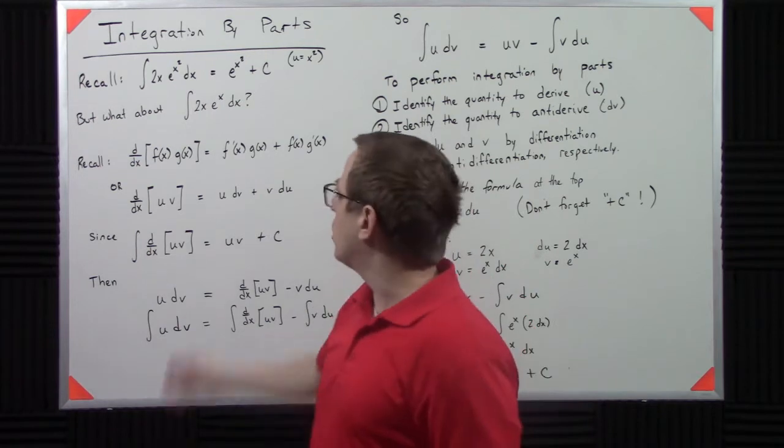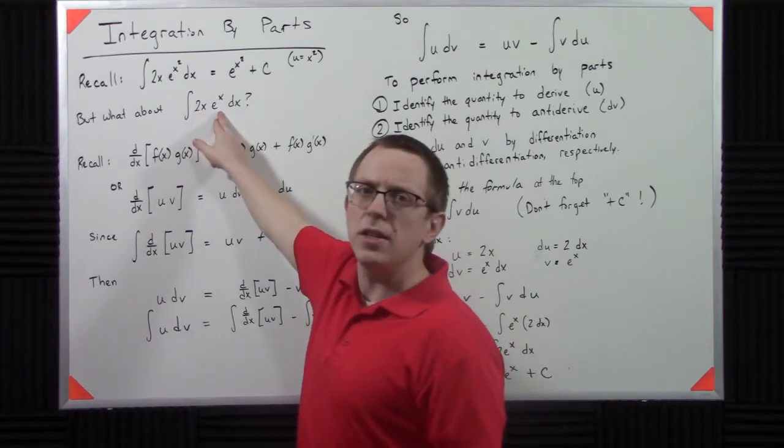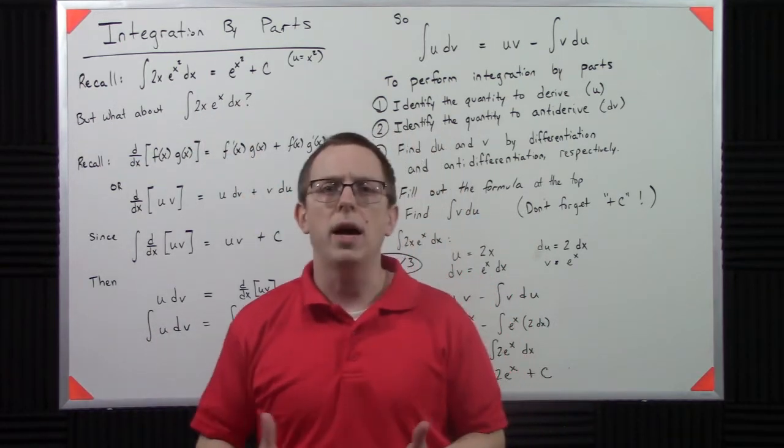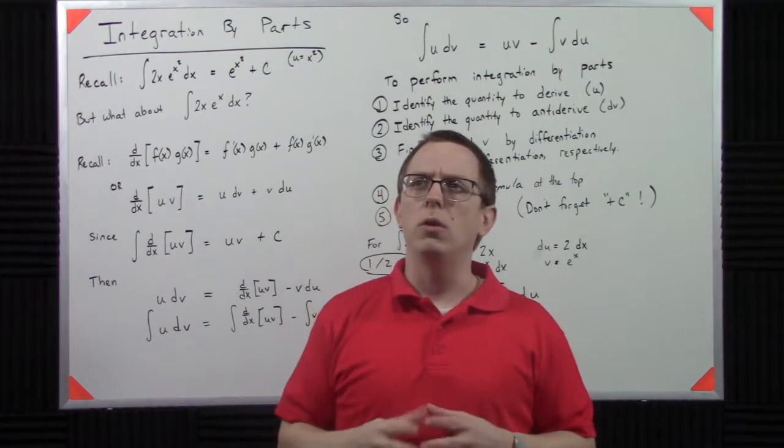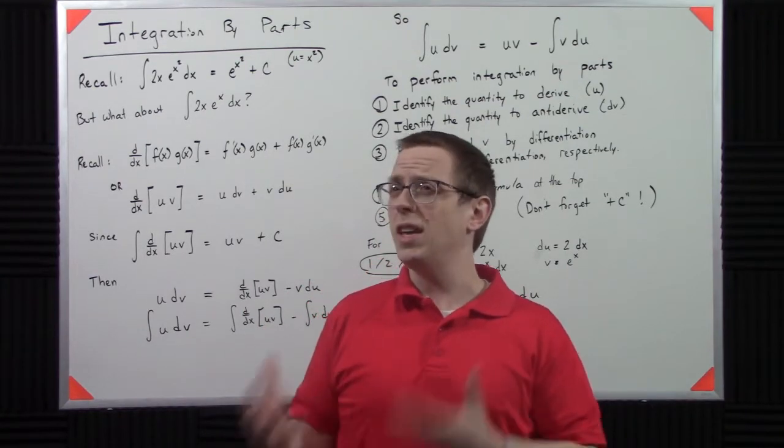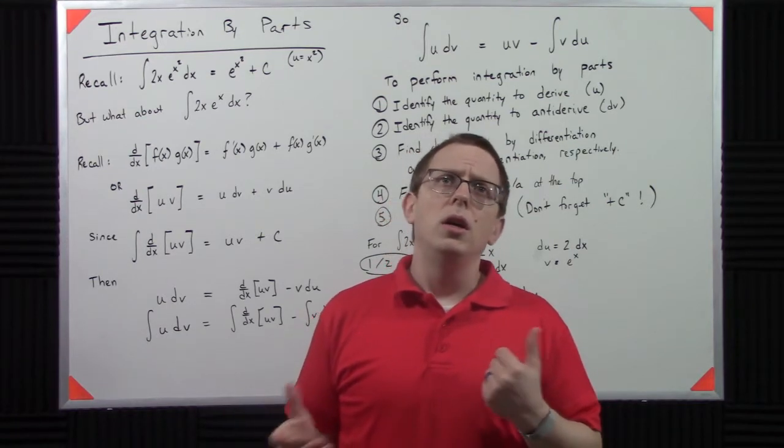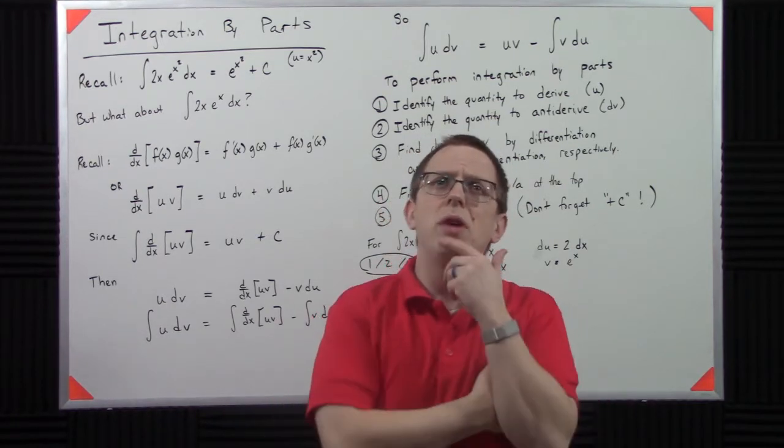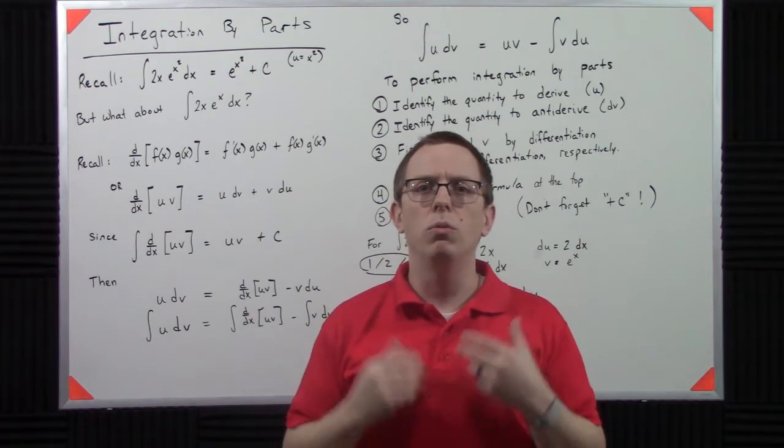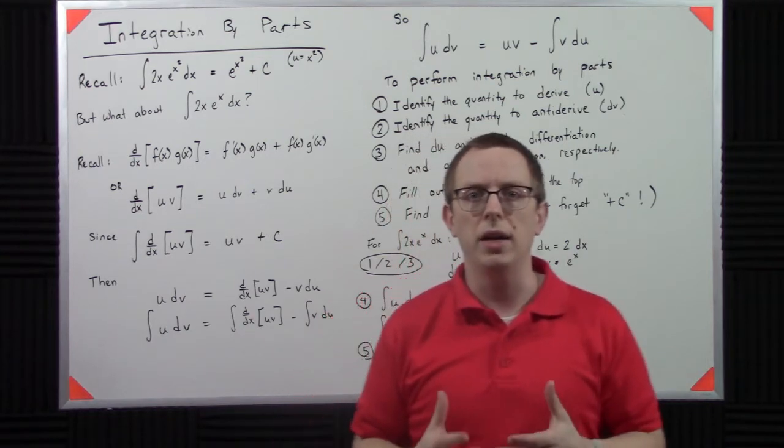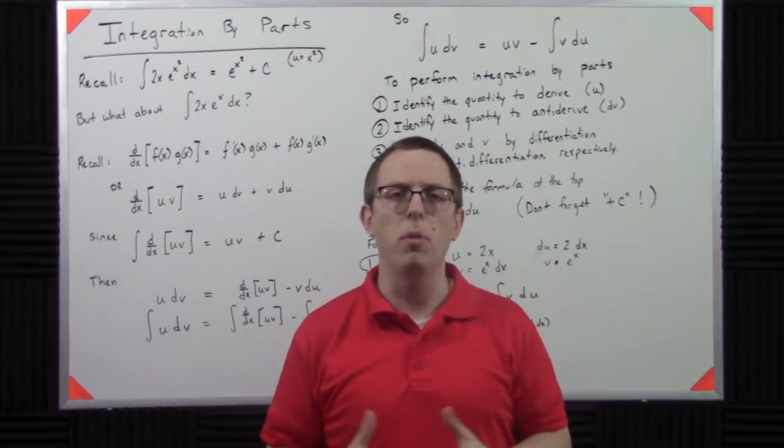However, what if we wanted to do something like 2x times e to the x dx? How would we do that? You might say to yourself, maybe I'll take u to be e to the x. Well, no, that doesn't really work out. So if I do that, how do I get there? Well, this is kind of the motivation behind the technique of integration by parts.